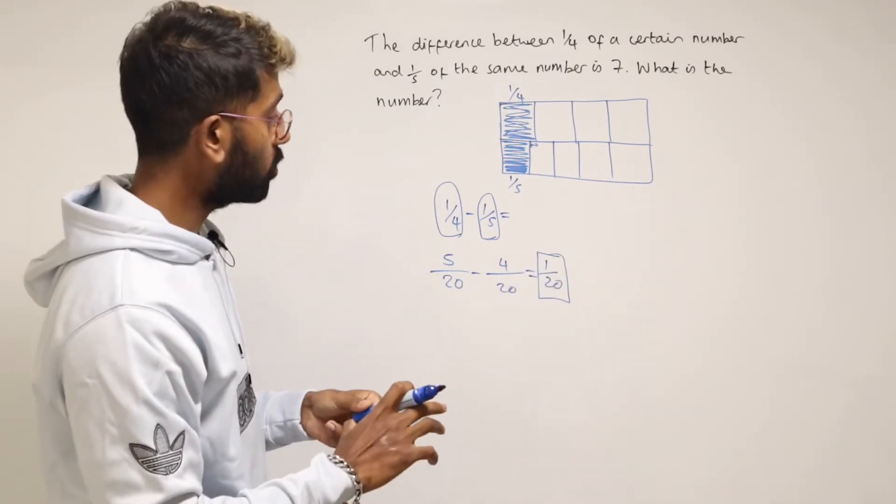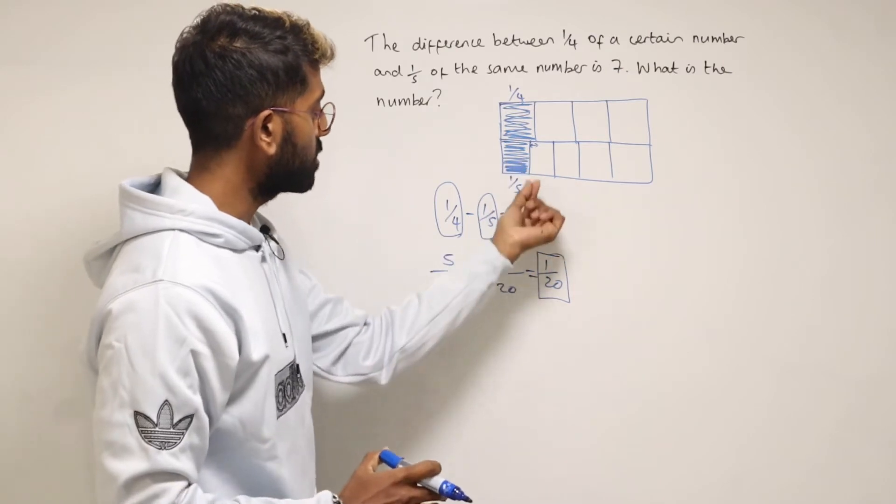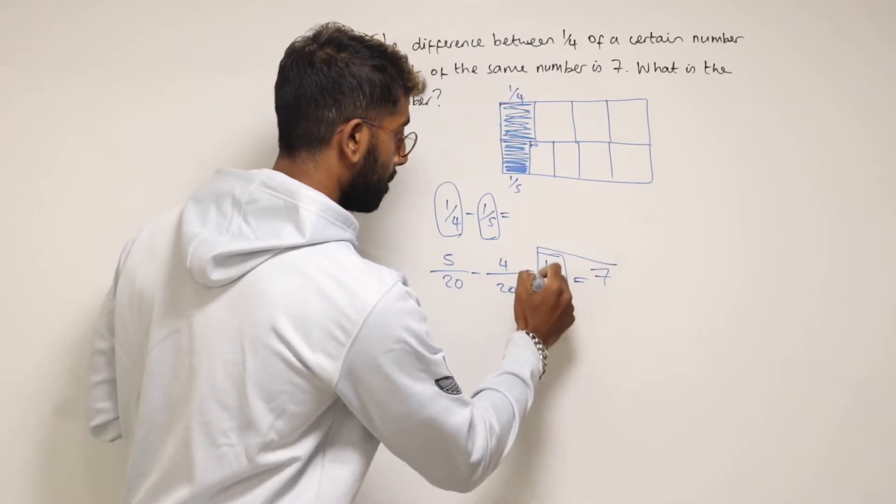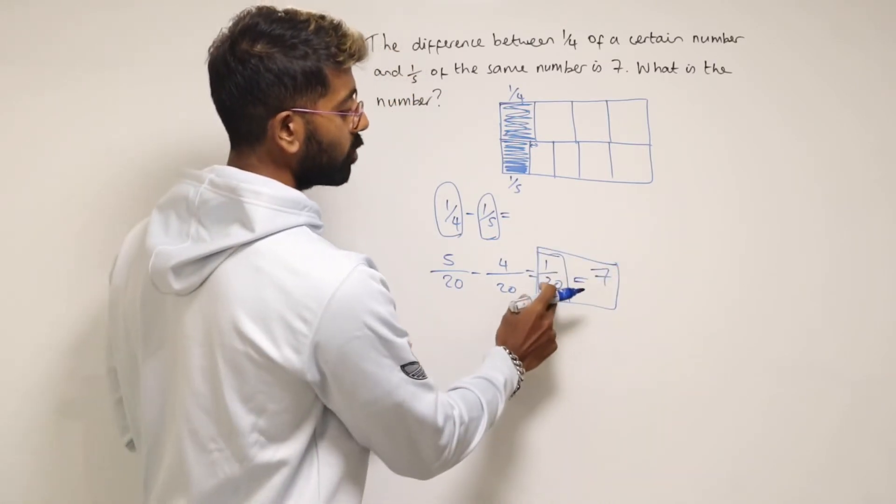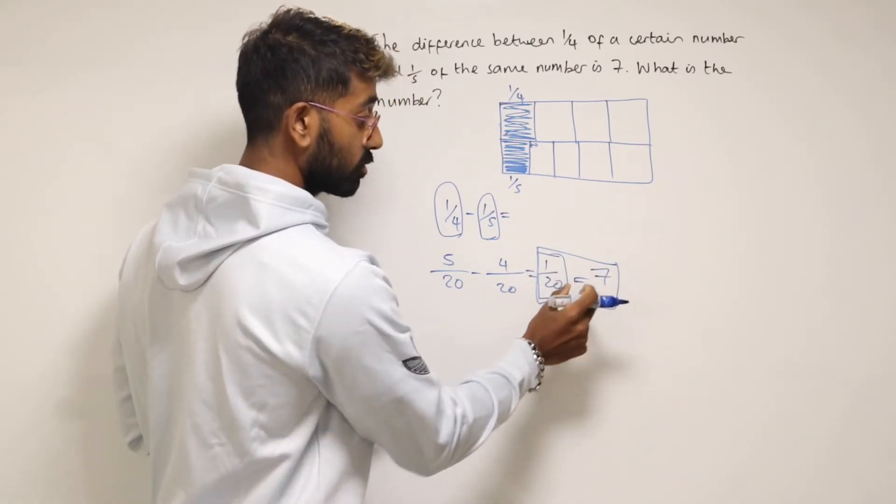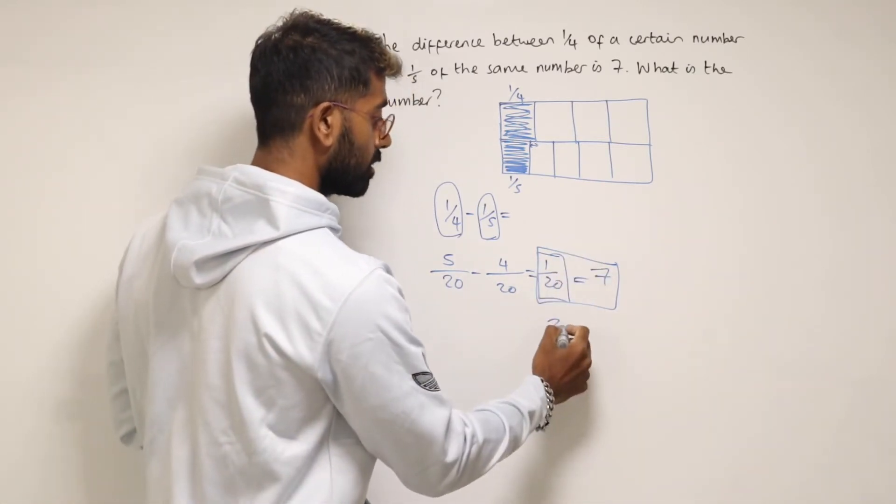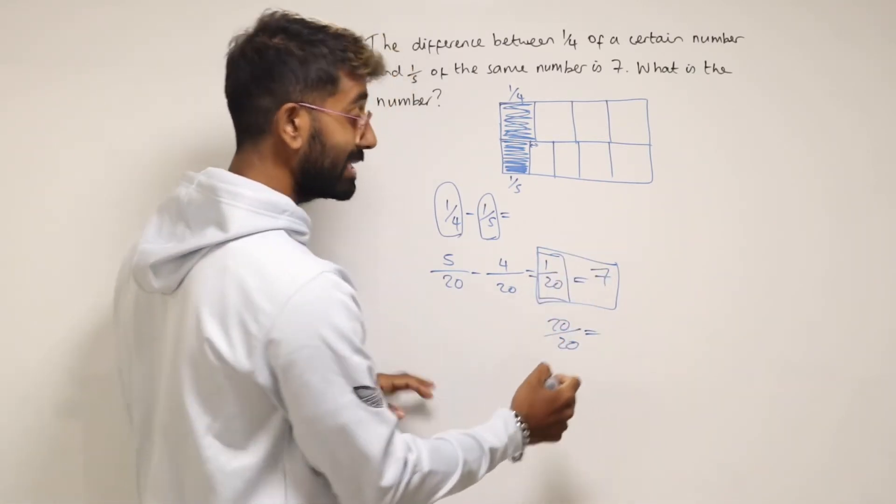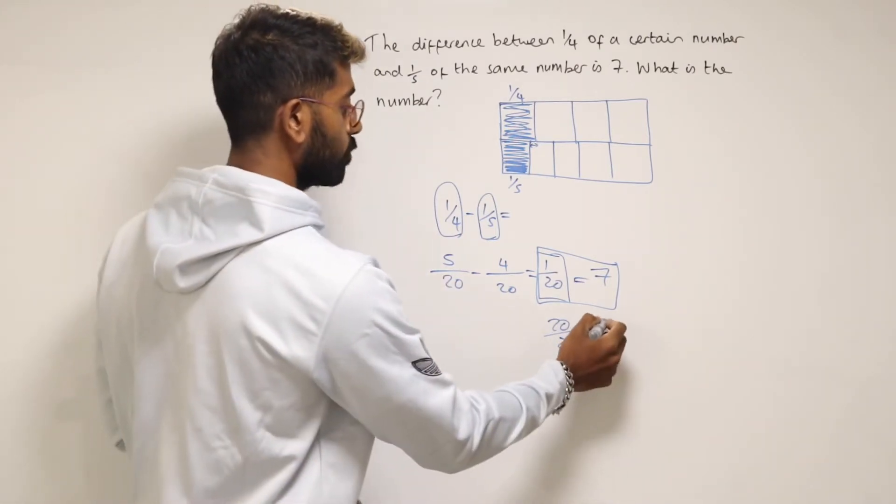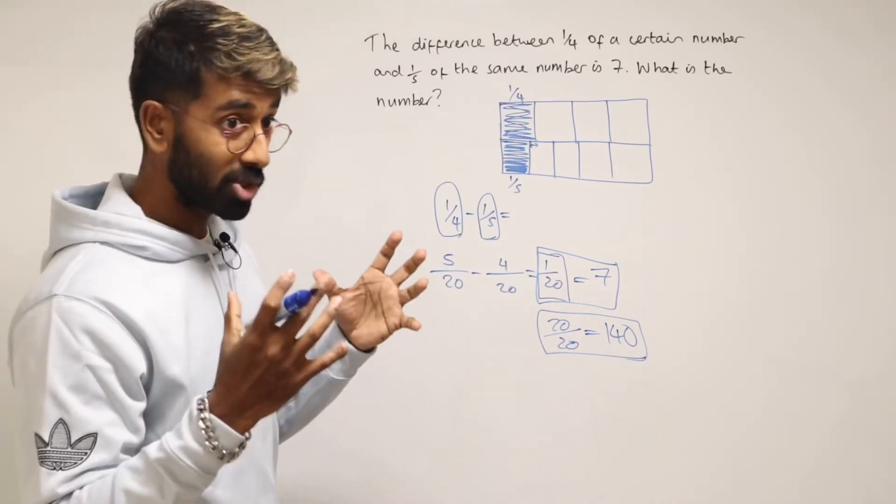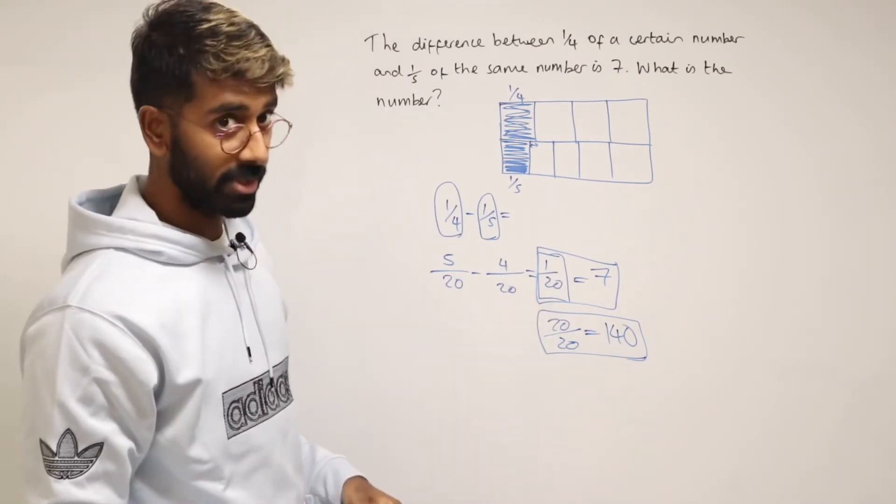And so what we're told is that difference, which is one twentieth of the whole number, is equal to seven. So if one twentieth of the number is equal to seven, then that means the whole number, which is twenty twentieths, would have to be a hundred and forty, because we've got to times that by twenty to make it twenty twentieths.